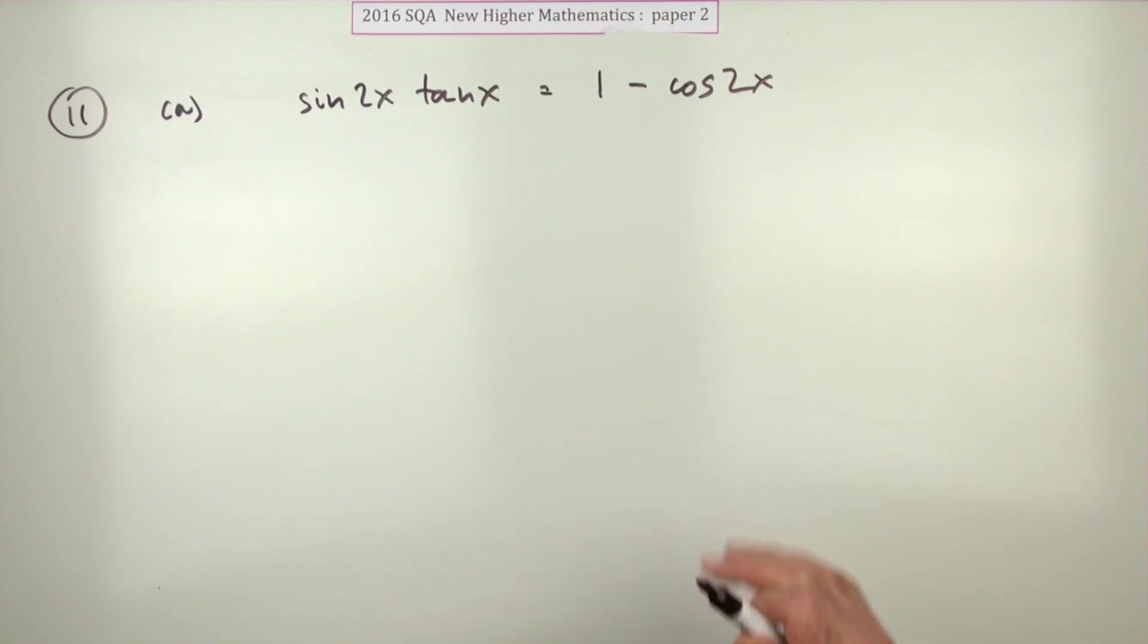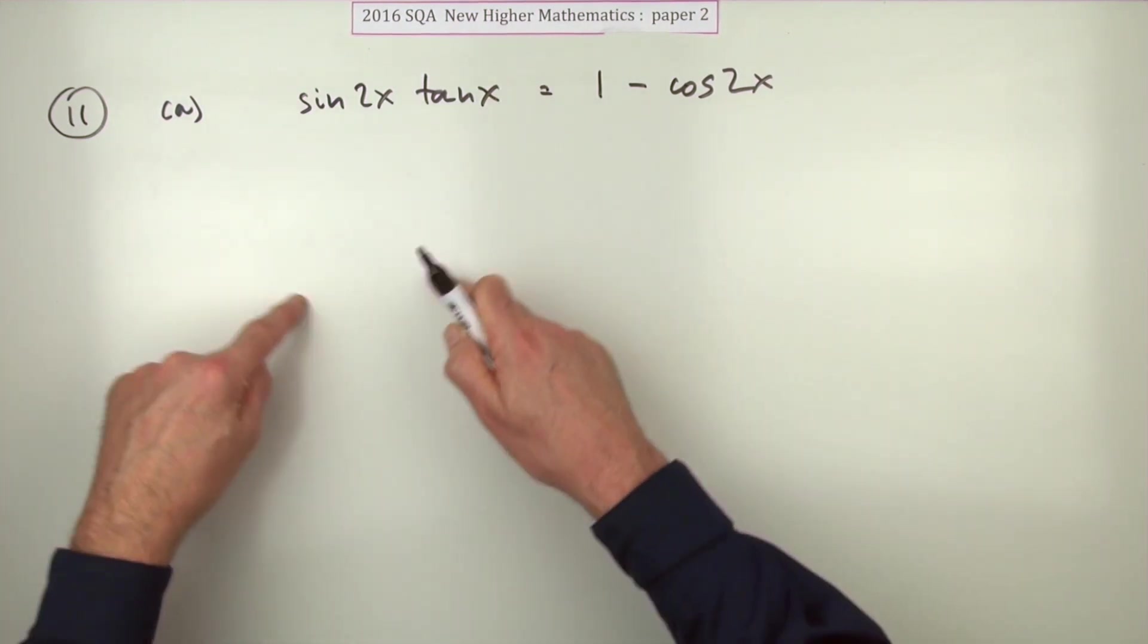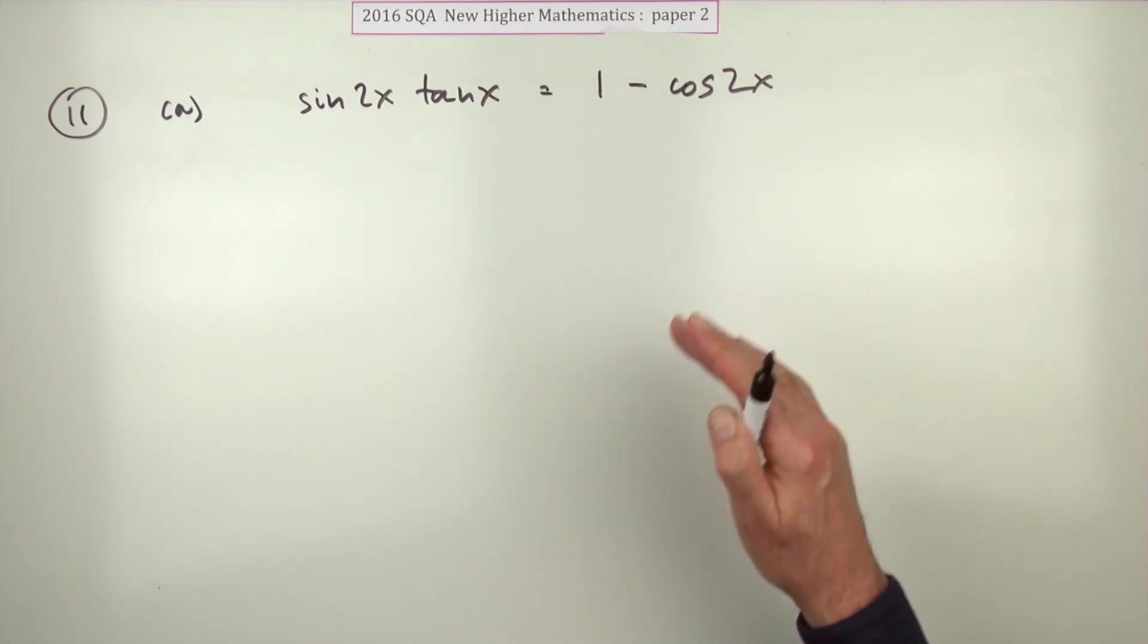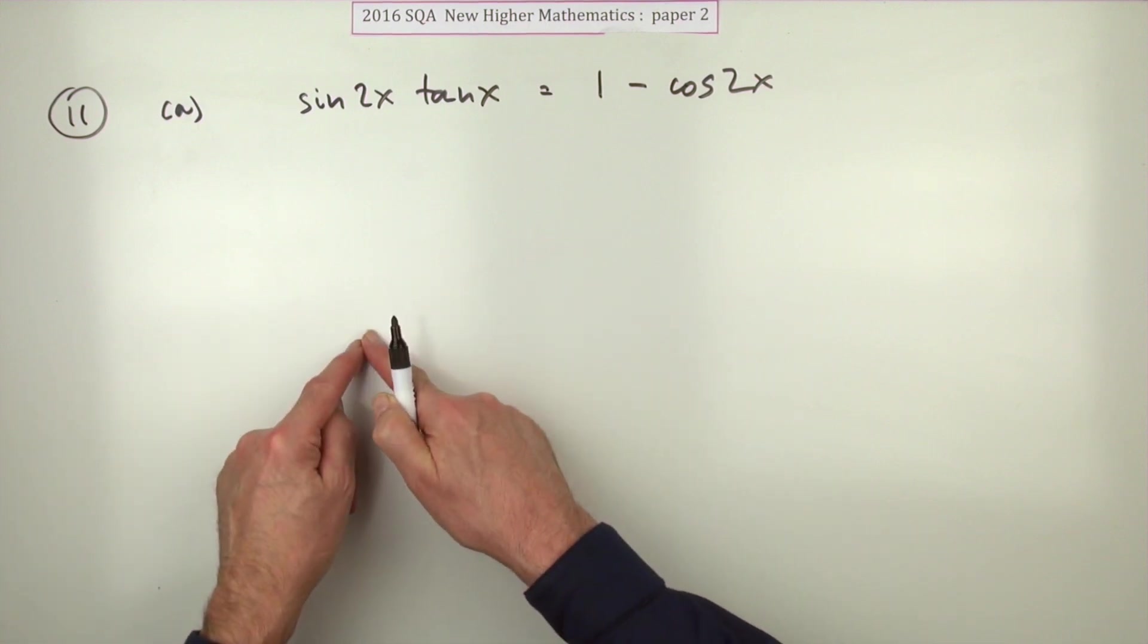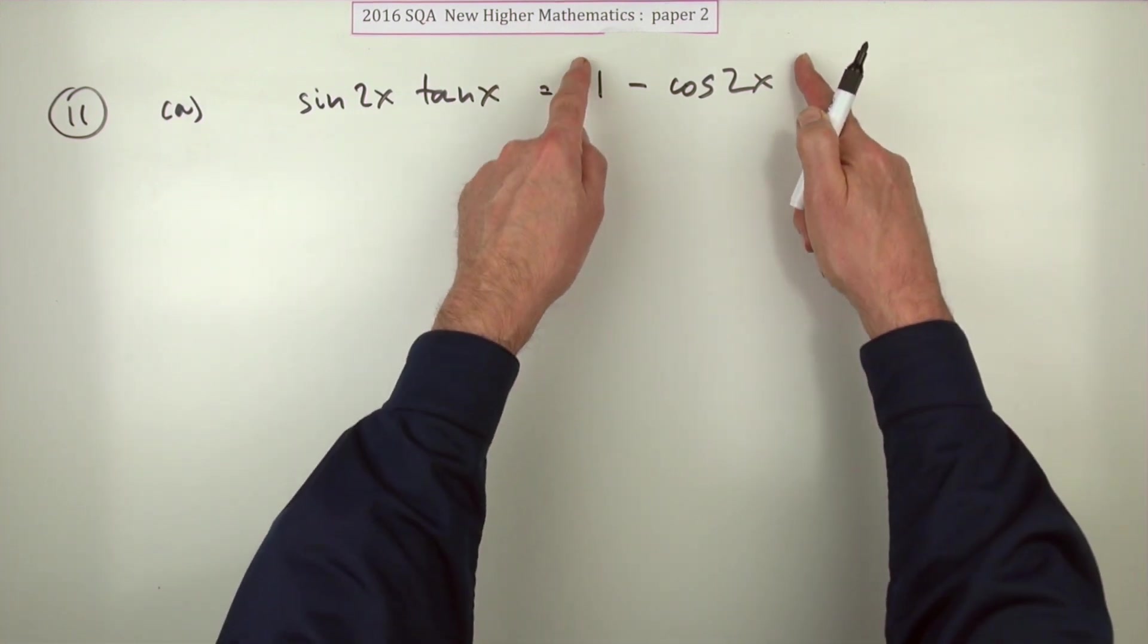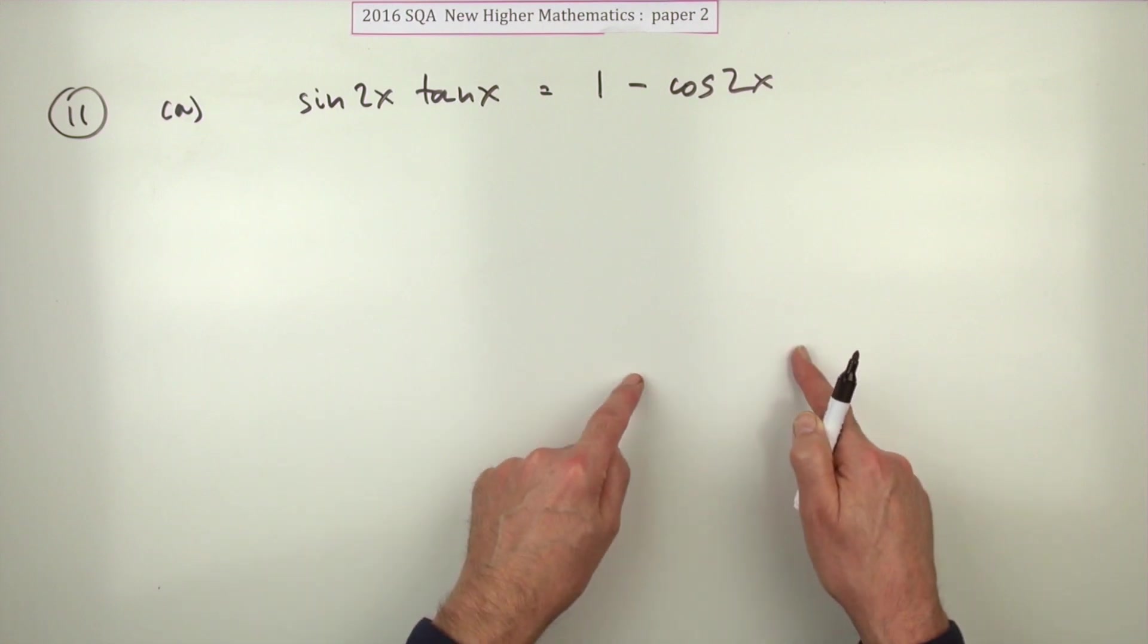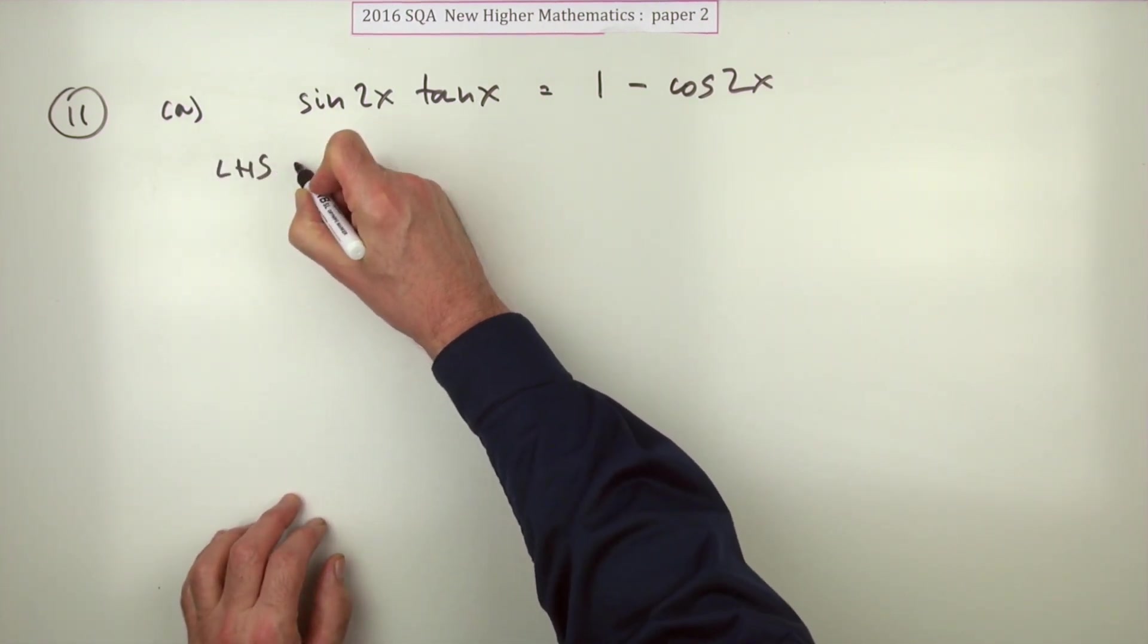The standard way is to take the left-hand side and manipulate it until you end up with the right-hand side. But there is an alternative: take the left-hand side and simplify it to some expression, take the right-hand side and simplify it to some expression, and if those two expressions are the same, then that also proves the identity. I'll take it the standard way.